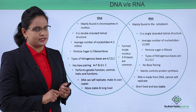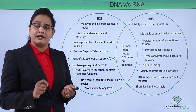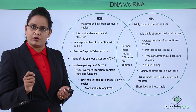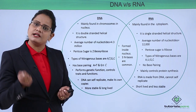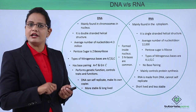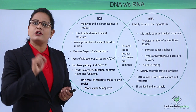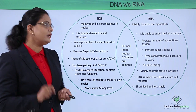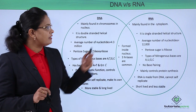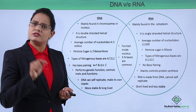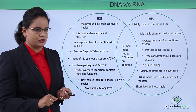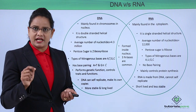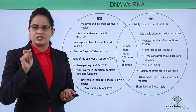In DNA, the average number of nucleotides is much higher, which is the reason it has a comparatively higher molecular weight than RNA. The average number of nucleotides in DNA is around 4.3 million, whereas in RNA it is around 10,000 to 12,000 nucleotides.